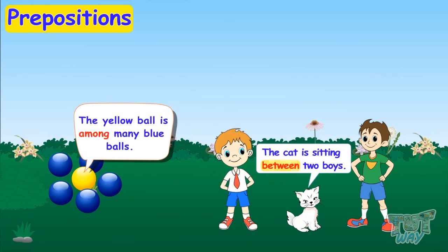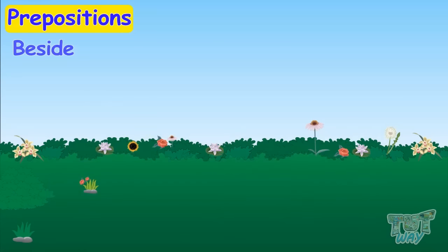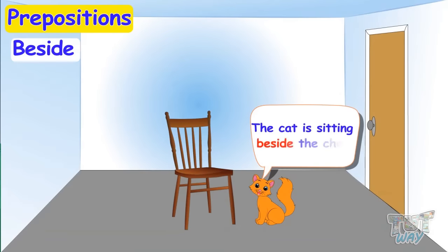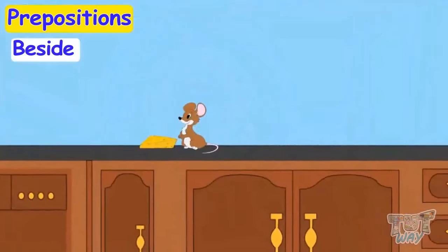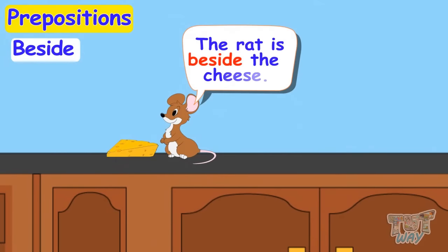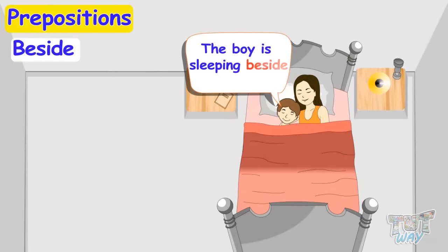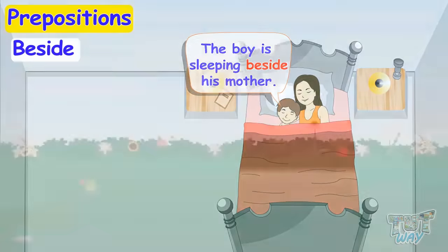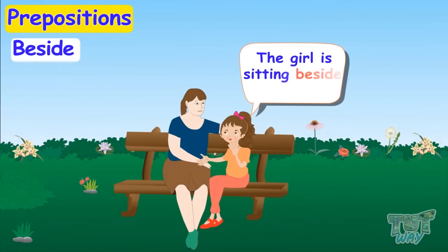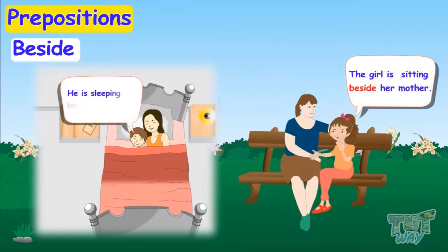It's time for the next preposition and it is 'beside'. The cat is sitting beside the chair. The rat is beside the cheese. The lion is beside the river. The boy is sleeping beside his mother. The girl is sitting beside her mother. When something is just next to another thing or very close to it, we say 'beside'.